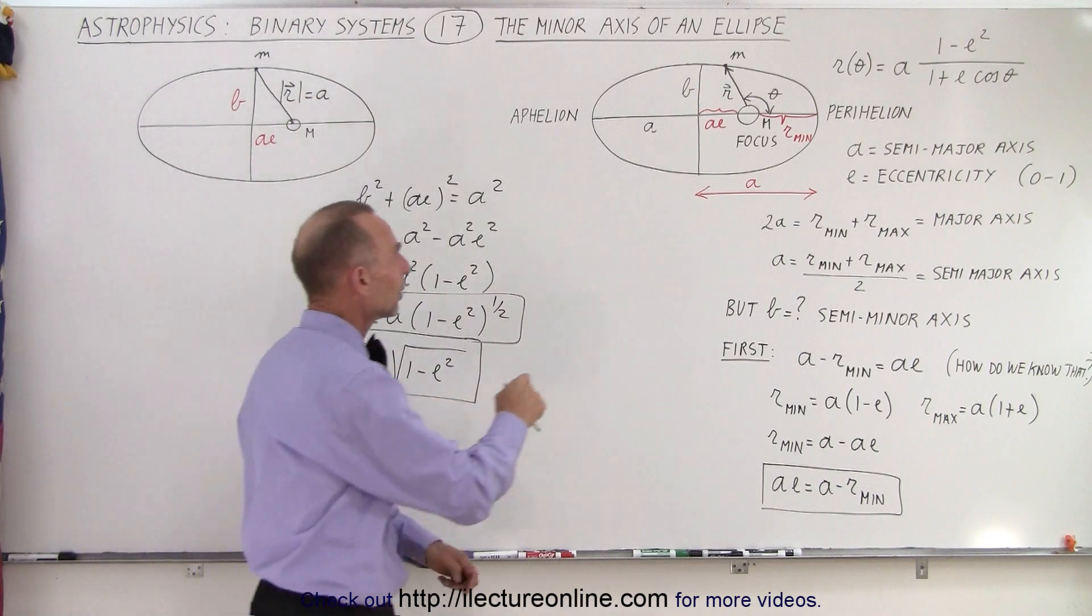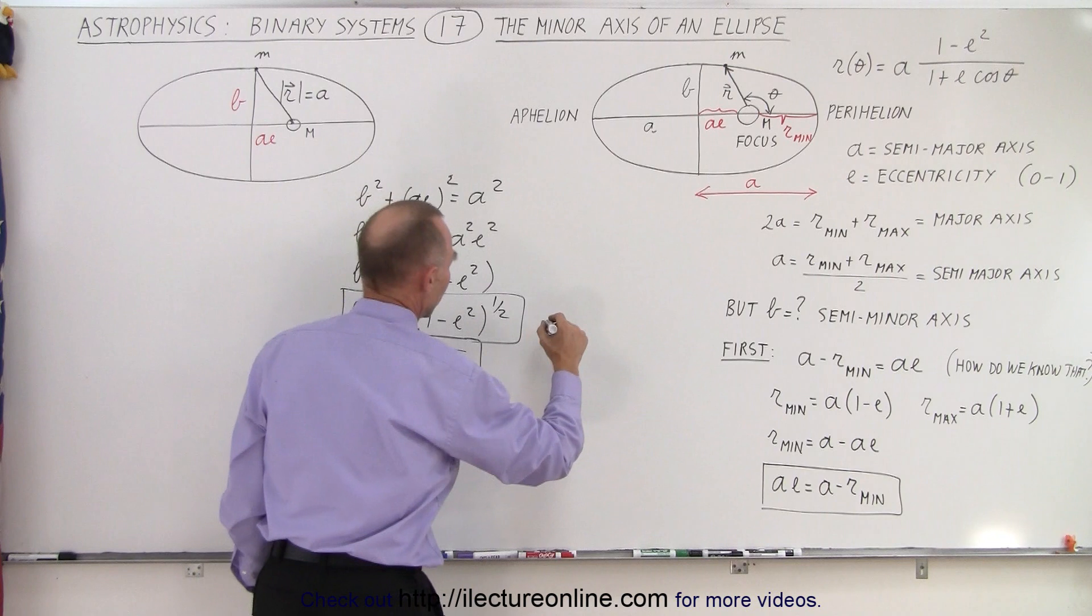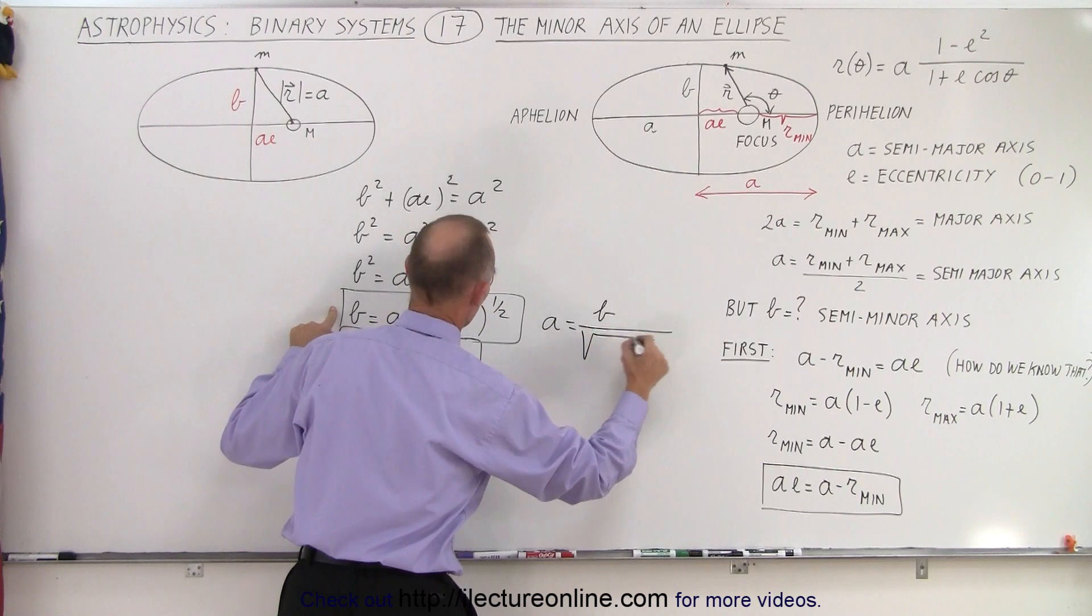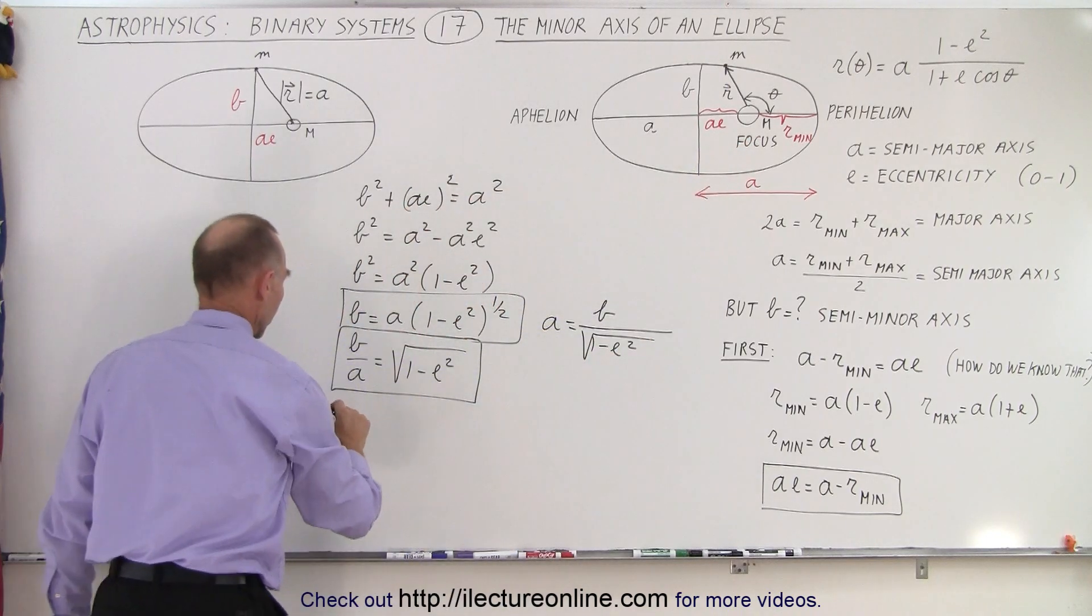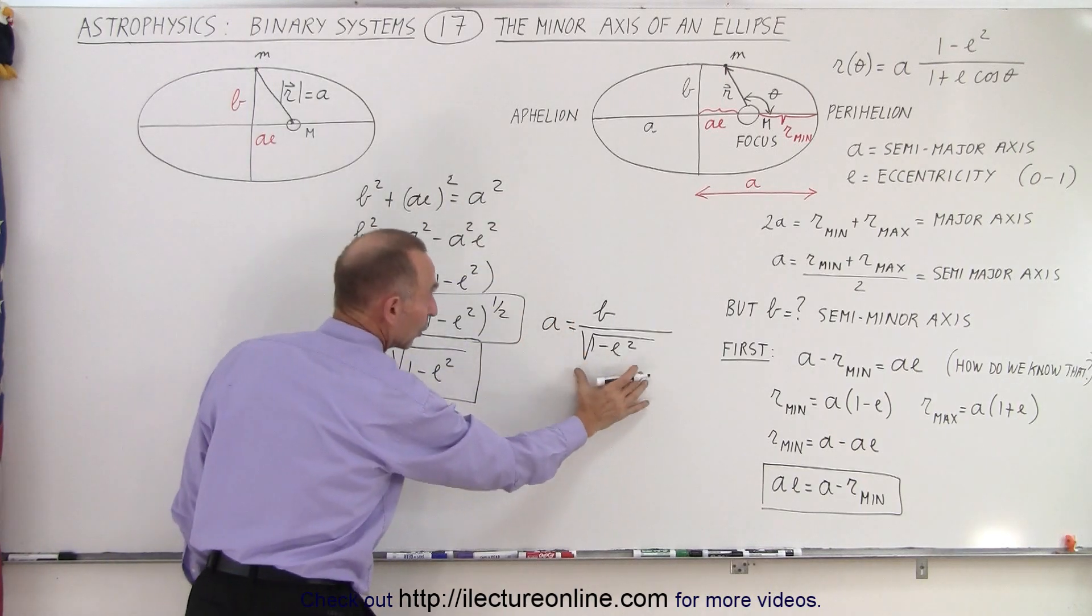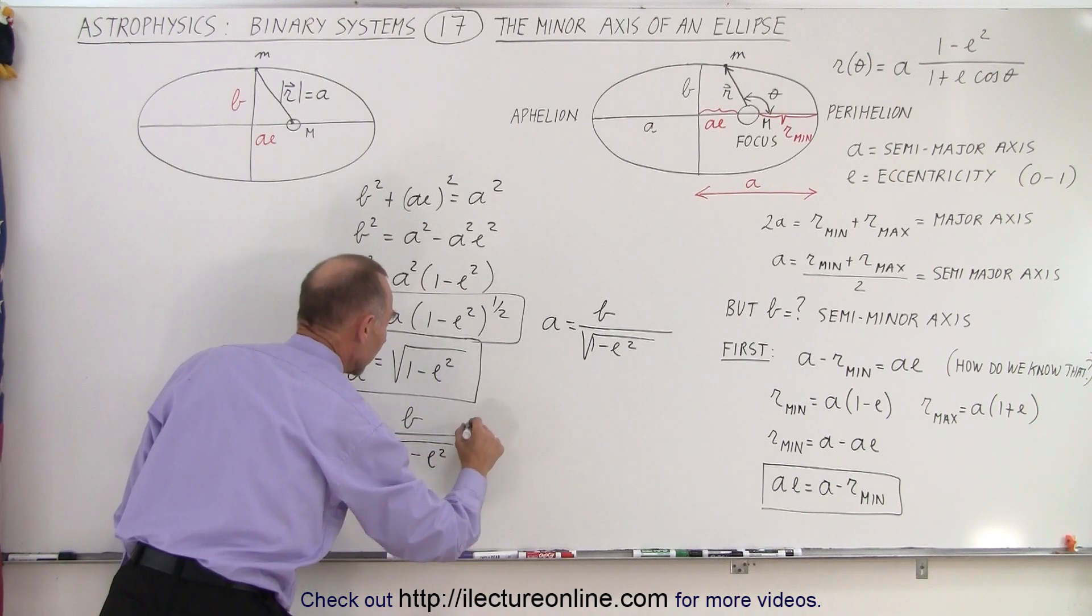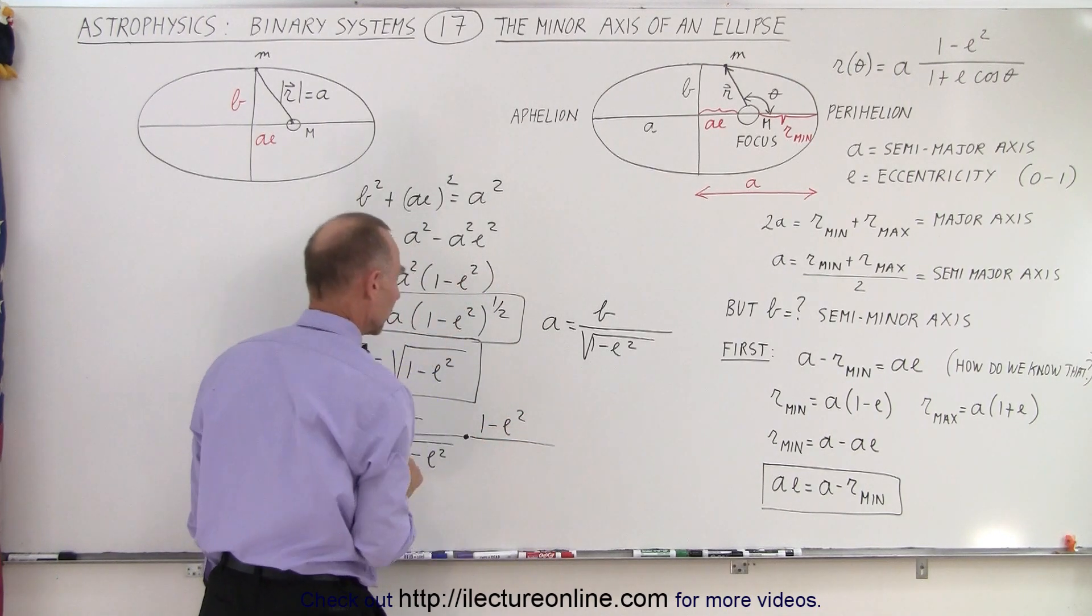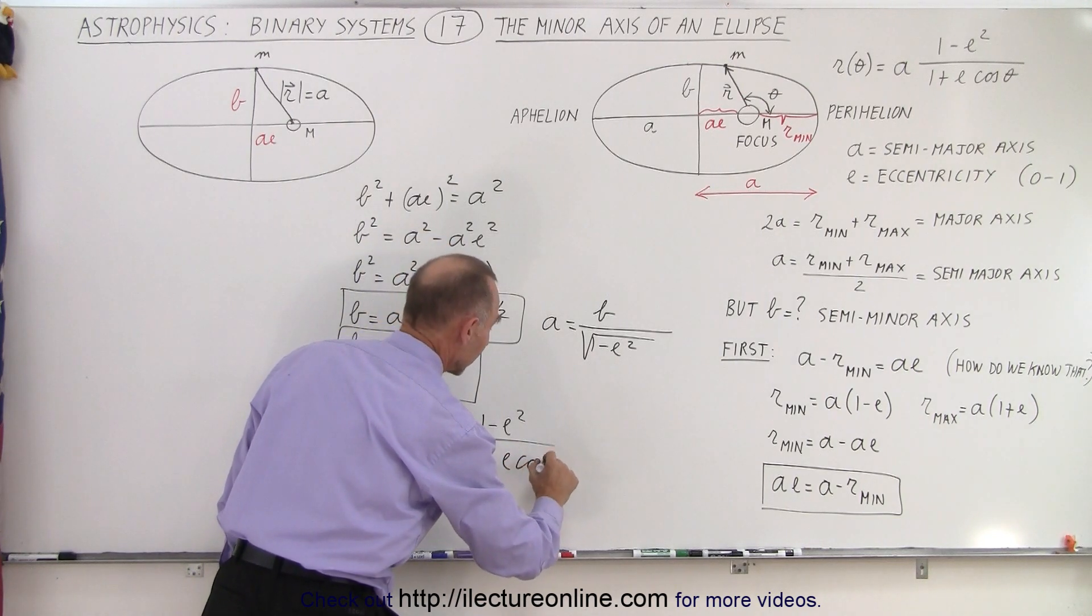Now what we could do is we could take a look at our equation right here and realize that we could solve this equation for A. We could say that A is therefore equal to B divided by the square root of (1 - e²). And then if we plug that into our original equation, we have r as a function of θ is equal to A—but instead of A, we're going to write the equivalent of A in terms of B: B divided by the square root of (1 - e²), times we have (1 - e²) in the numerator like that, the multiplication sign, and 1 + e cos θ in the denominator.